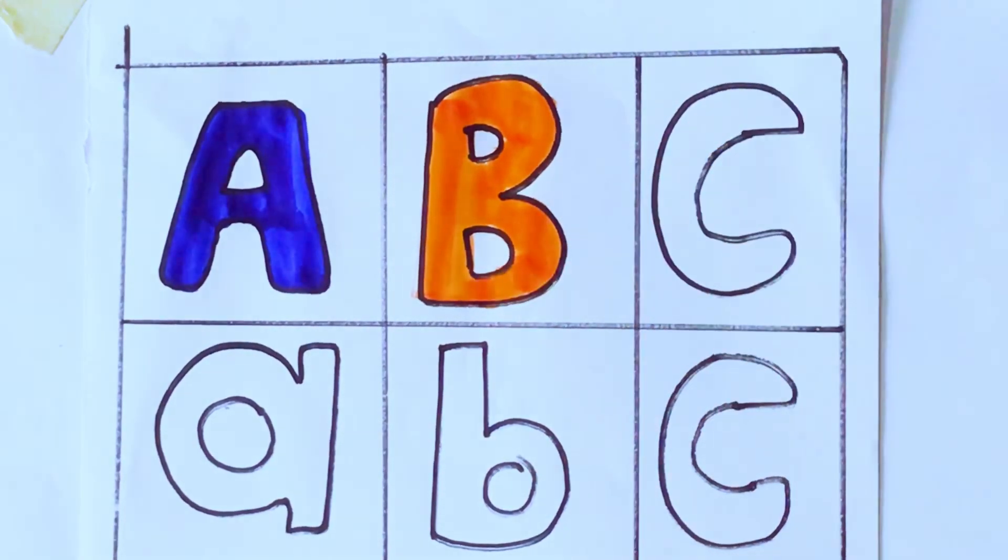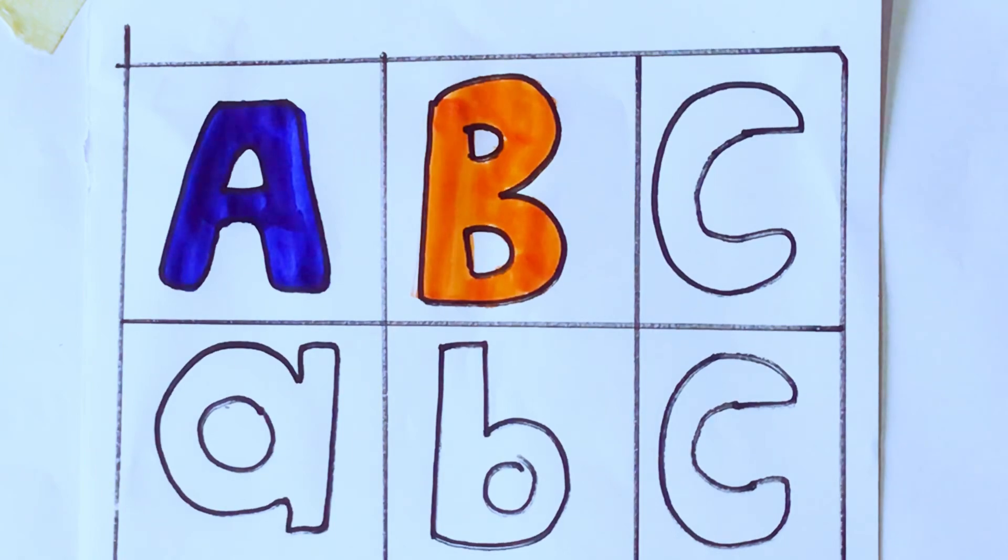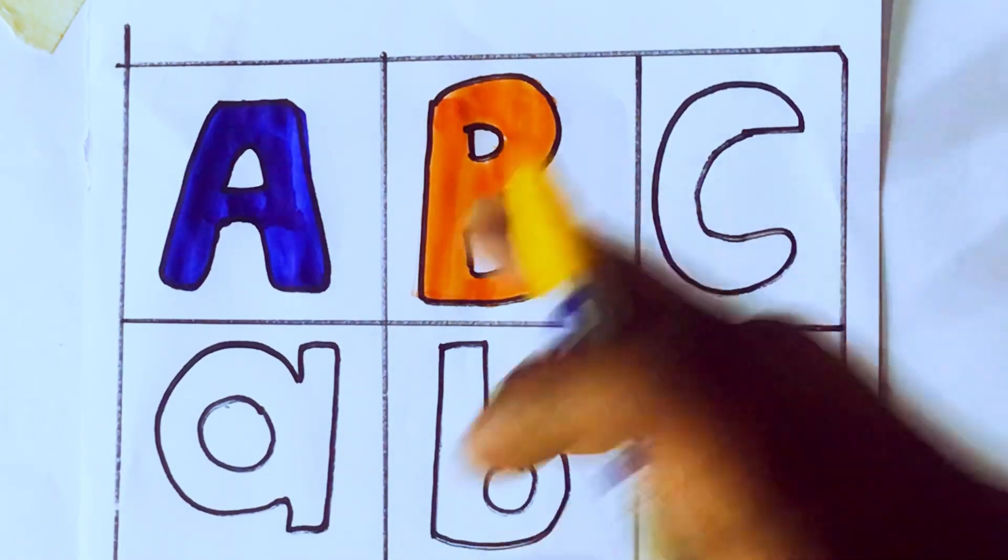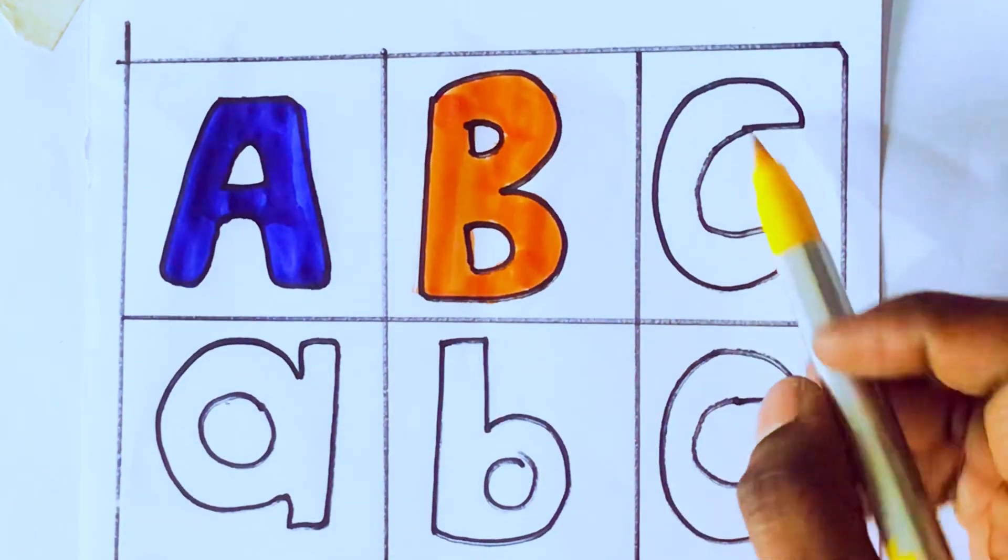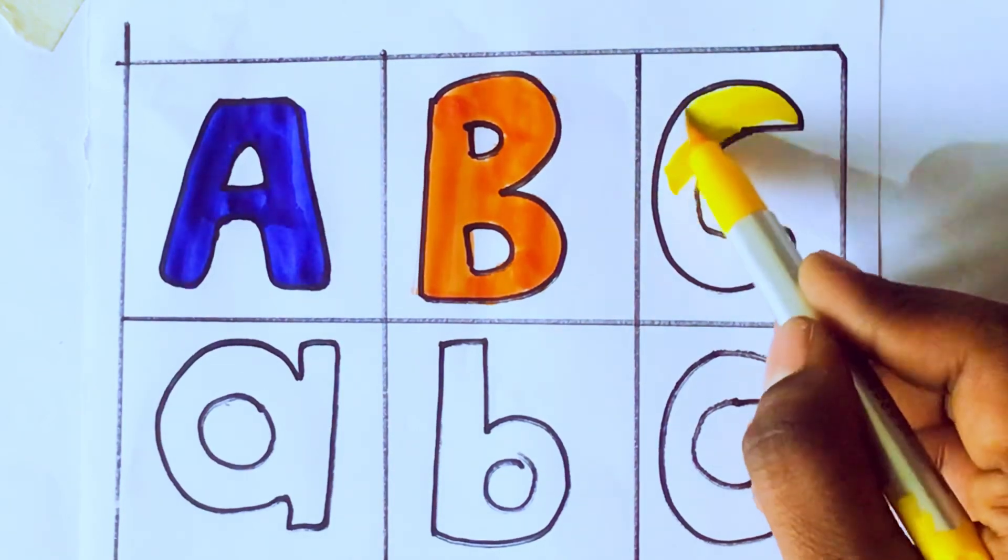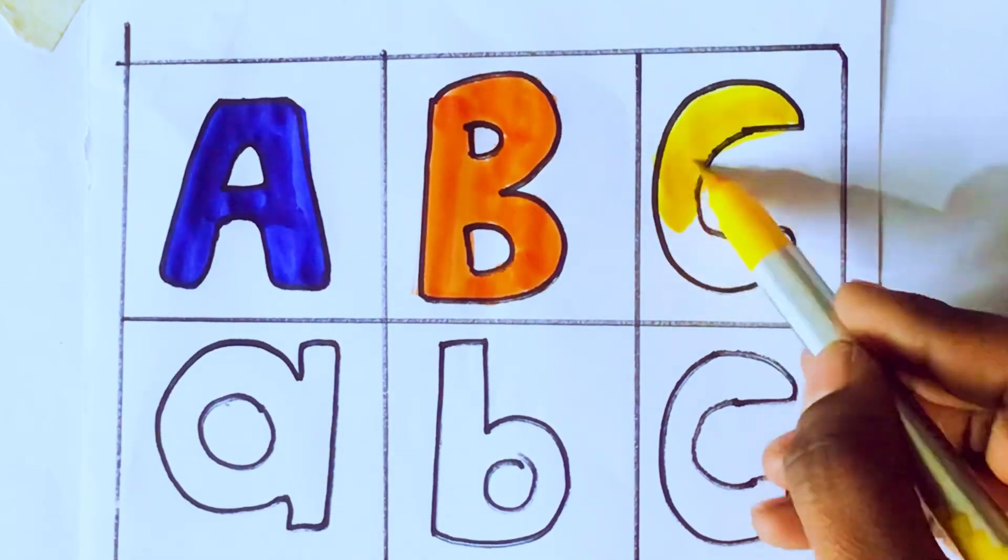Yellow color, C. Which letter kids? C. C for cat. C-A-T.